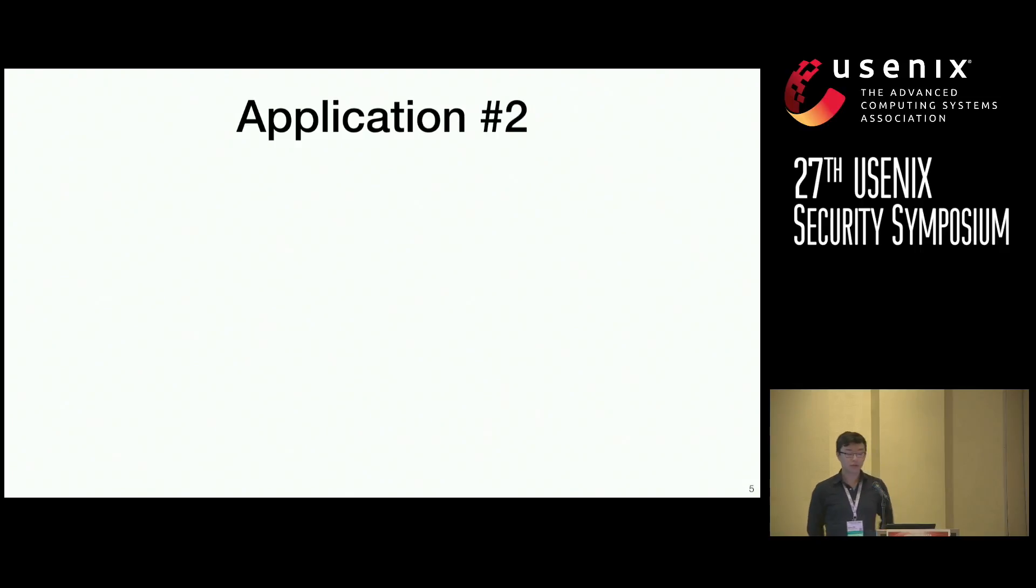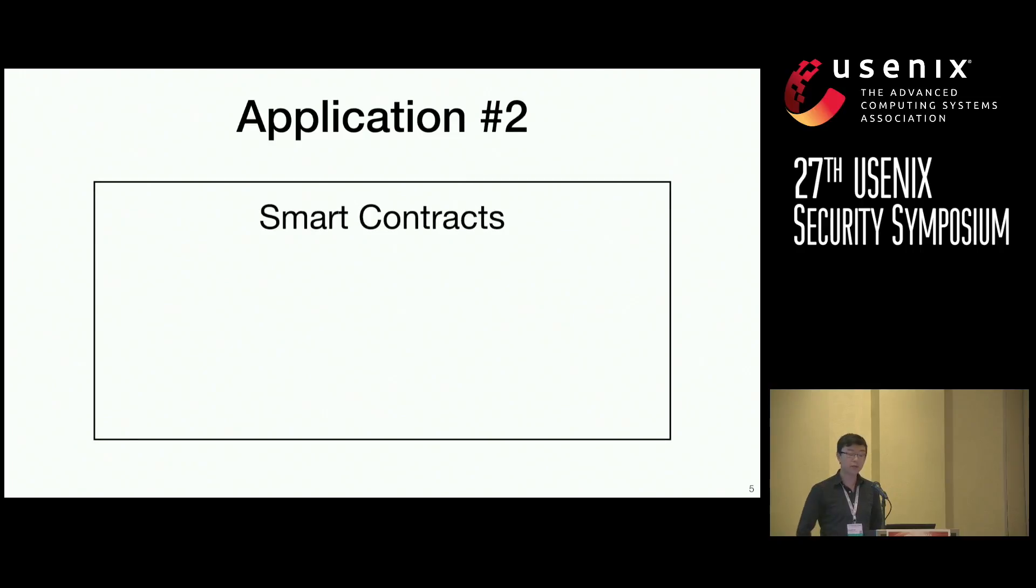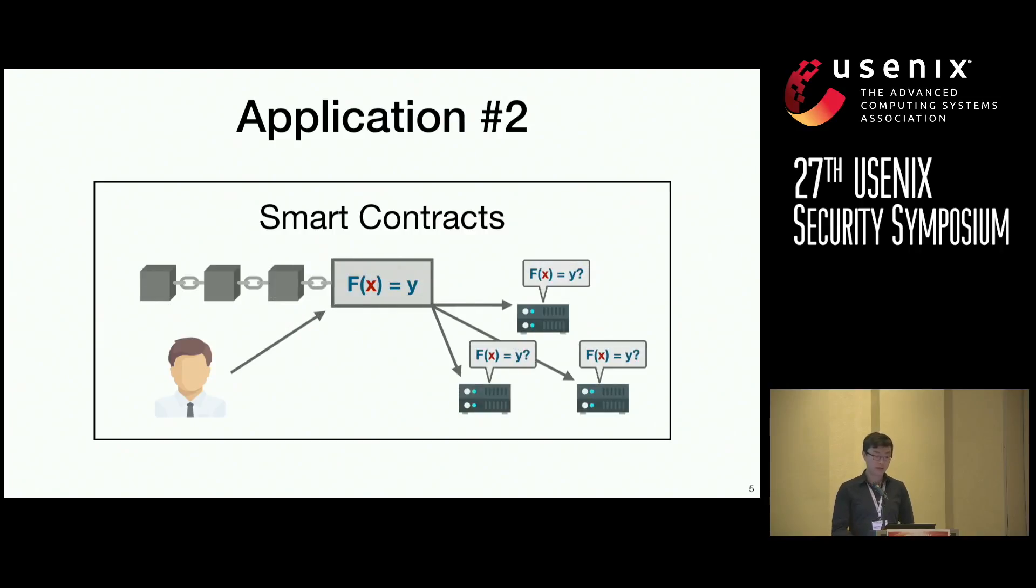Let's look at a second application. Suppose you wanted to use smart contracts to run a publicly verifiable computation. Well today, invoking a smart contract requires validators to rerun the computation. A more scalable approach is for the caller to run the computation off-chain, sending the result along with a proof attesting to the validity of the result. Then the validators would only need to check the proof, and we have already established here that the proof itself is quite cheap. These two applications were chosen specifically to motivate our problem, which I'm now going to address.